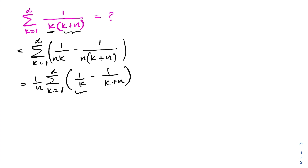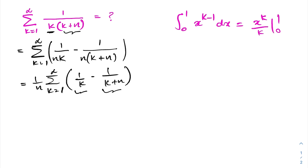Now we have 1 over k and 1 over k plus n. I am going to introduce an integral representation. If we integrate from 0 to 1 of x to the k minus 1 dx, we get x to the k over k evaluated from 0 to 1, and applying the limits gives us 1 over k. So instead of 1 over k we can plug in this integral.